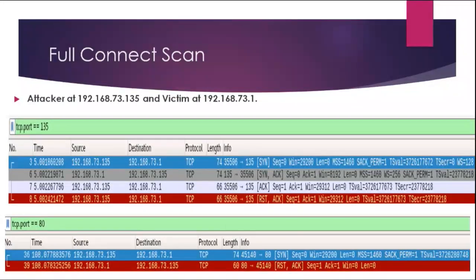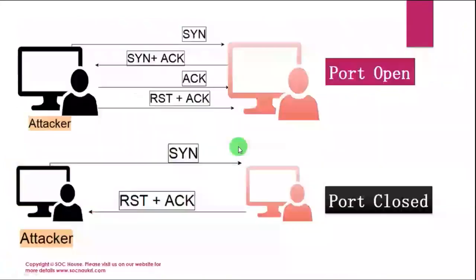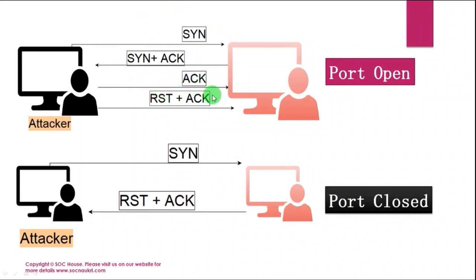Full connect scan is another type of scan that completes the 3-way handshake with the target. The attacker first sends a packet with a SYN flag. The target replies with SYN+ACK if the port is open. The attacker then sends the ACK flag to complete the 3-way handshake, and sends a reset flag with another packet to reset the connection. Otherwise, the target system will wait for the communication to start, which can cause high CPU and memory utilization.